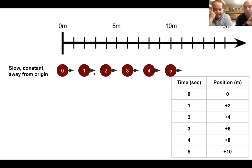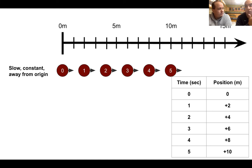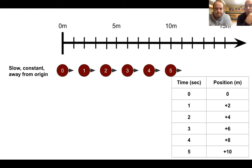Why on earth is there a plus two there? Because clearly we're going that way. In the physics world, direction matters. This is going to be really similar to math — somebody along the way decided that if you're going to the right, we're going to say that's positive, or if you're going up, that's positive. If you're going to the left, that would be negative, or going down is negative. Some smart person along the way decided that and we all decided to follow along.